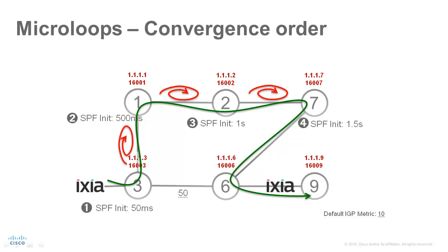When the traffic is started, we will bring up the link between node 6 and node 7. Then we will count the number of packets lost due to the microloop. The number of lost packets will be equal to the loss of connectivity duration in milliseconds. Without microloop avoidance, the expected loss in this demo is about 1 and a half seconds, since that is the SPF delay configured on node 7.